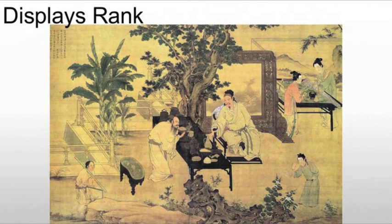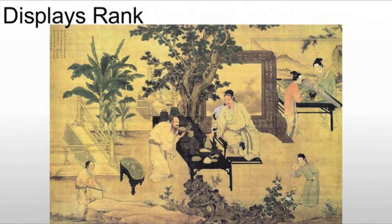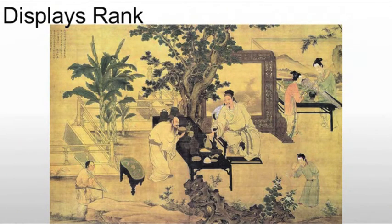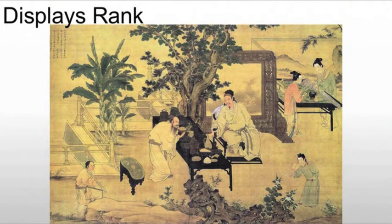As these room dividers and screens are initially developed, they tend to display rank. For example, you might see a scholar with a screen behind him that's going to be made of bamboo or other wood products. As you move up in rank, you're going to have more spectacular images and more spectacular screens, and we see one here in the painting right there in the center.